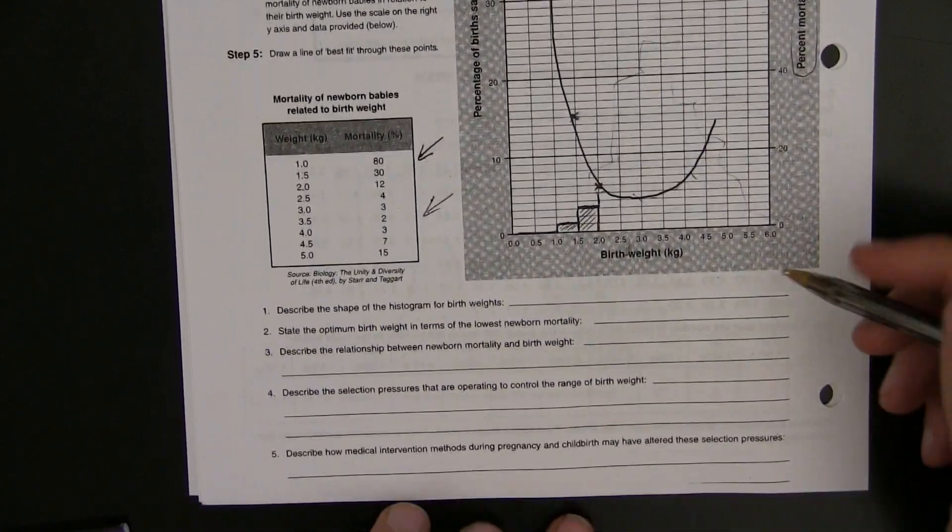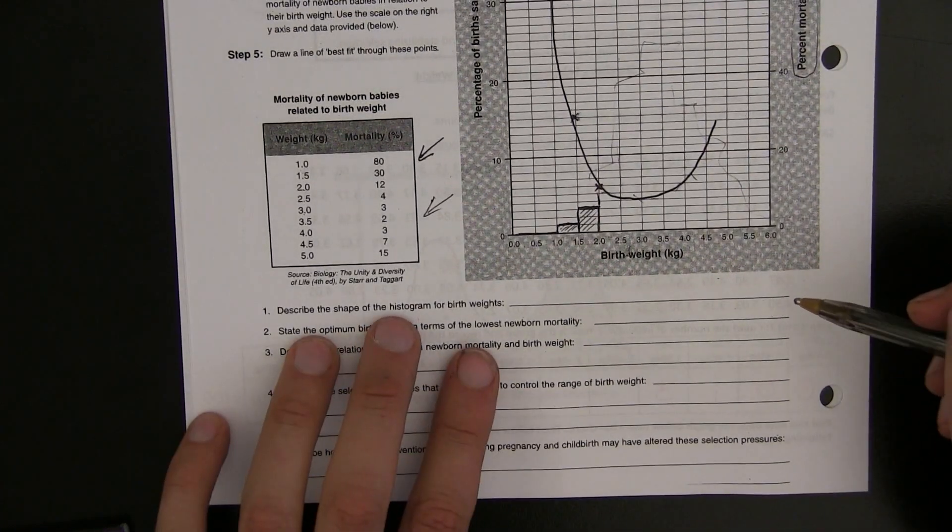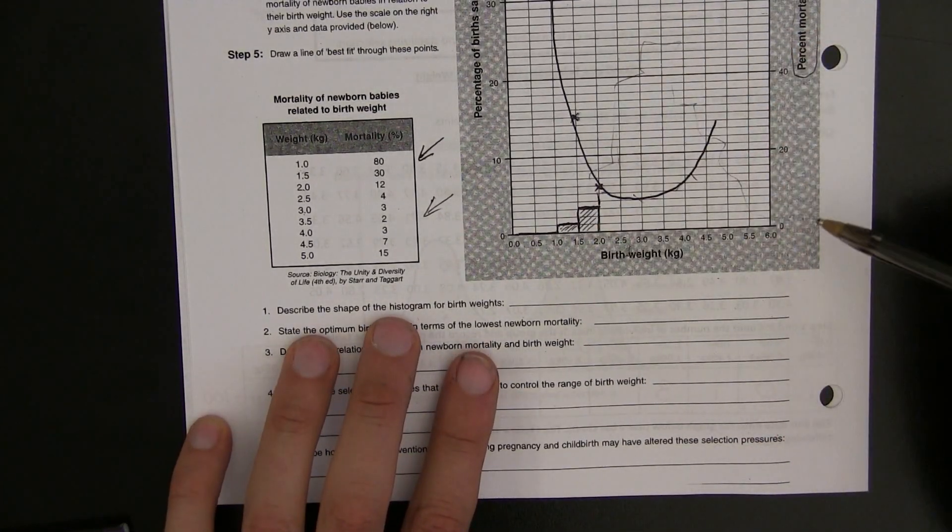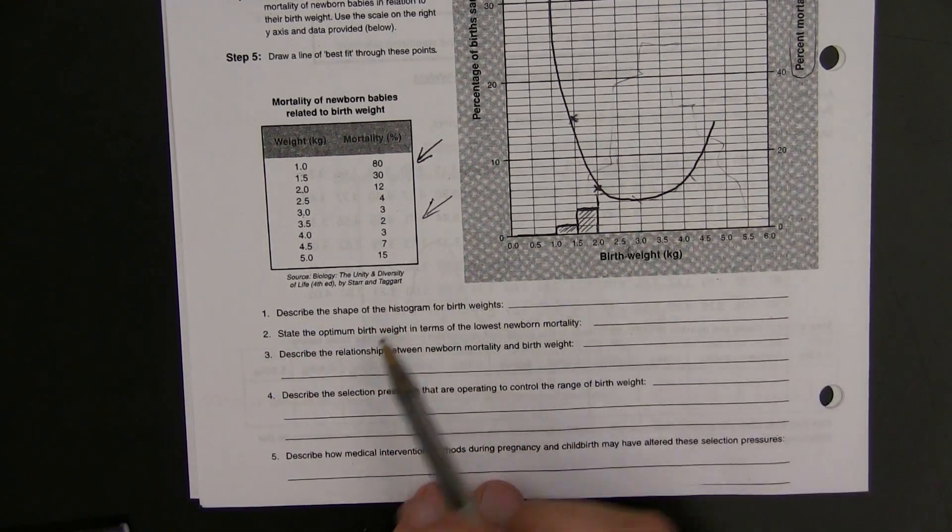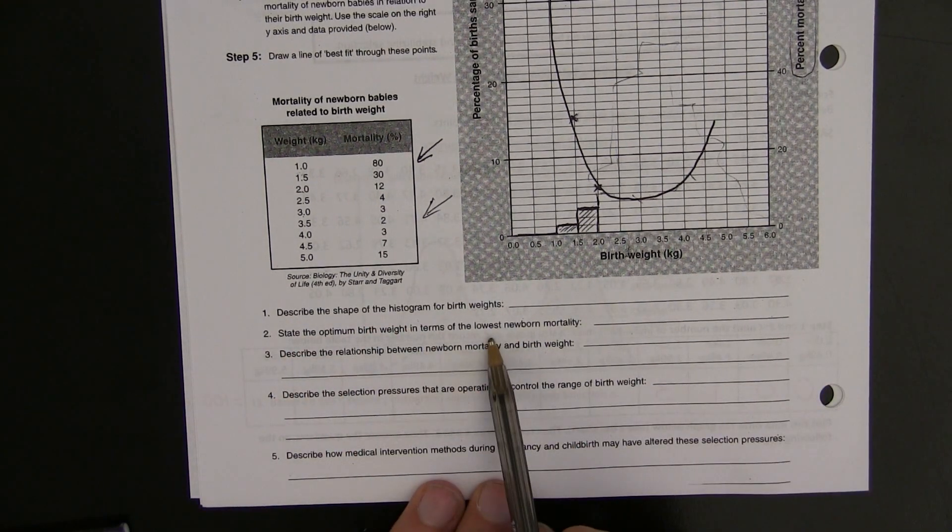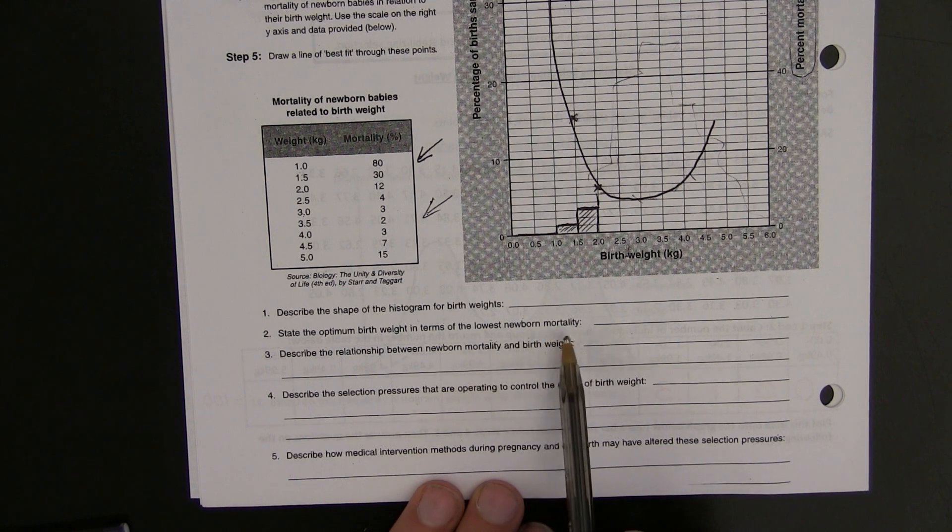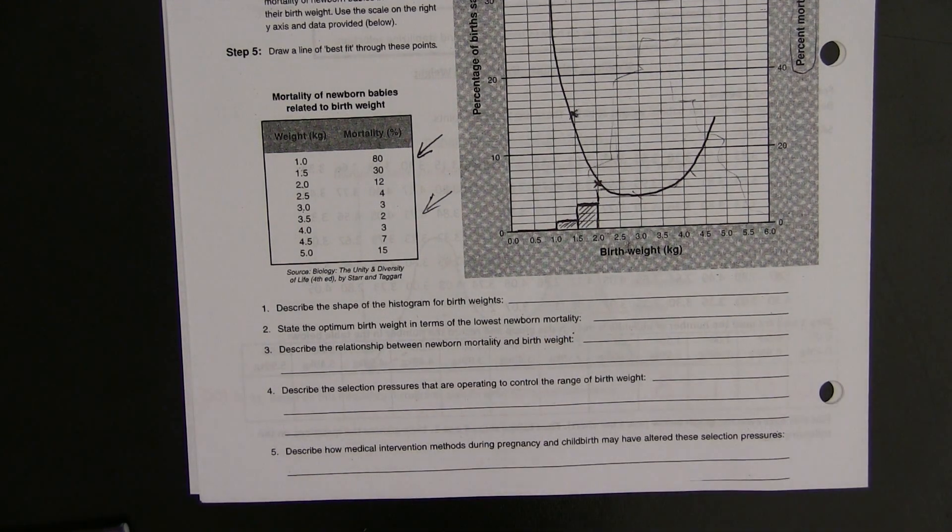Once you're done with that, describe the shape of the histogram for birth weights. That's the bar chart. State the optimum birth weight in terms of lowest newborn mortality. In other words, what's the best chance of survival? What birth weight is the best chance of survival?